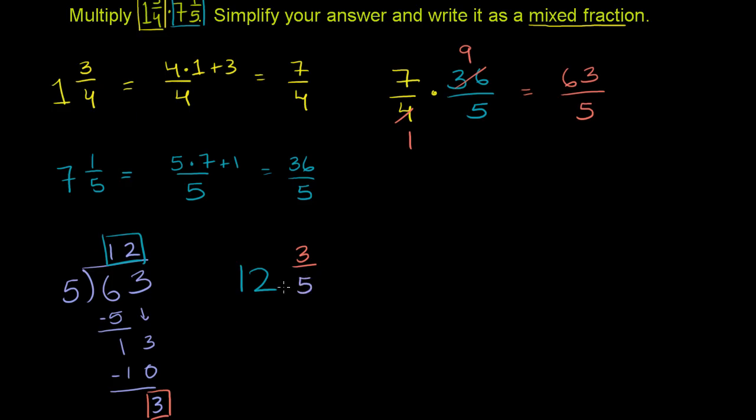And if you wanted to go back from this to that, just think. 12 is the same thing as 60/5, or 60 over 5. 60 over 5 plus 3 over 5 is 63 over 5. So these two things are the same thing. These two things are equivalent. This is as an improper fraction. This is as a mixed number, or a mixed fraction. But this is our answer. Right there. 12 and 3/5.